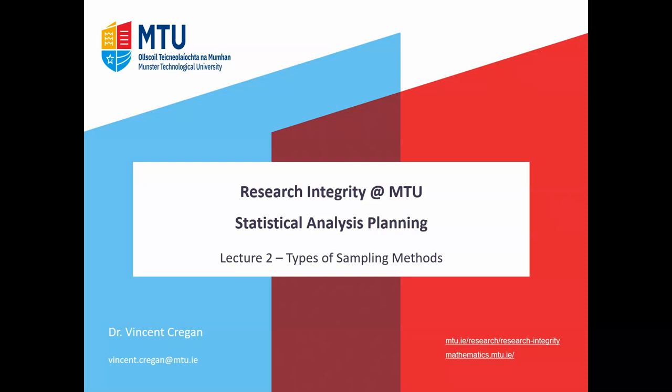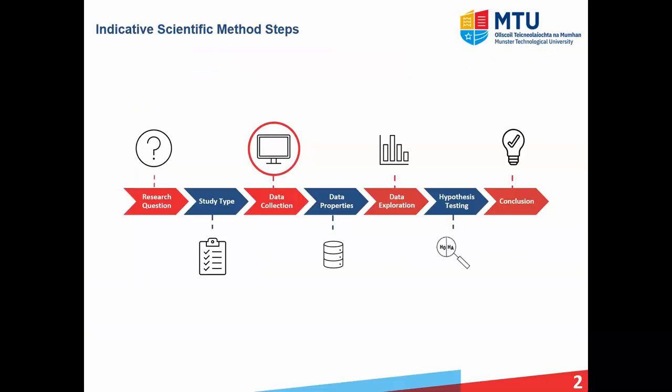In lecture two we're going to look at the different types of sampling methods. Returning to our indicative scientific method steps, previously we looked at the different study types available to you as a researcher. We're now going to look at how you actually collect the data that will be used in your study, and that data will ultimately be used in your analysis and hypothesis testing. Firstly we look at the different types of sampling methods, and then we'll consider some specific methods for actually getting the data.